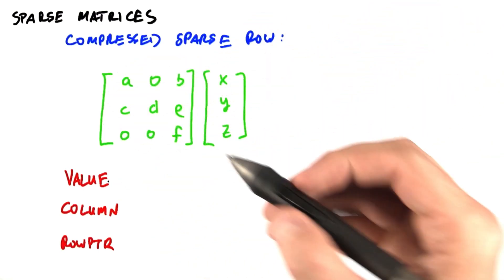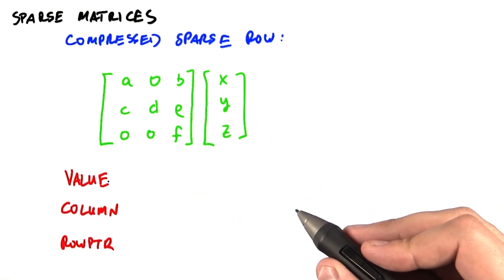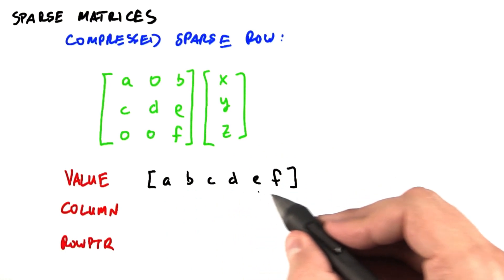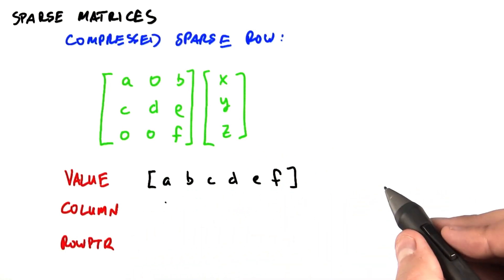The first one is what we call the value vector, and it is simply going to represent all the non-zero data. Here we're simply going to list all the data that are not zero as one long array.